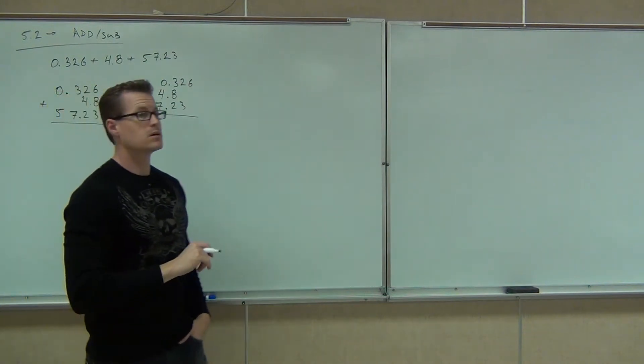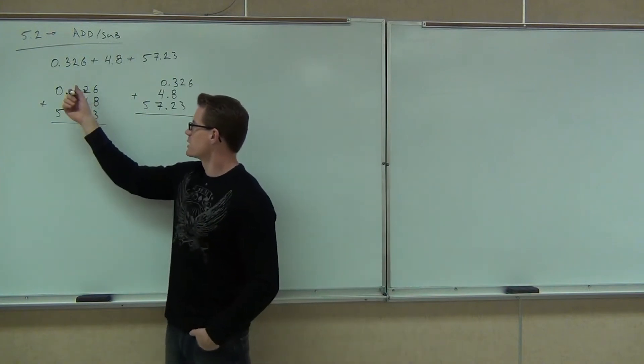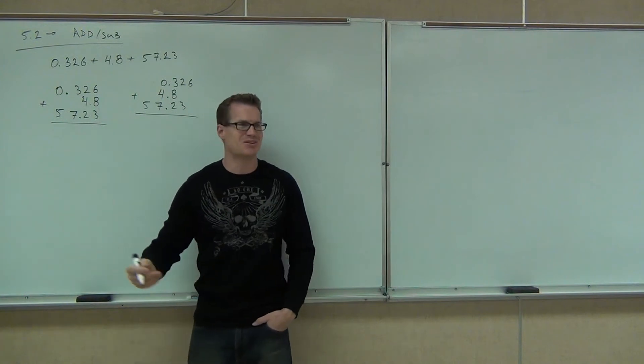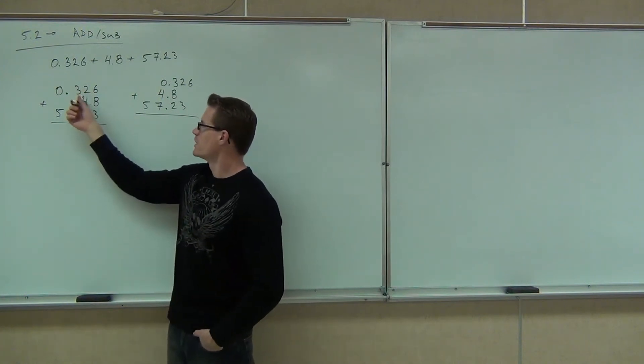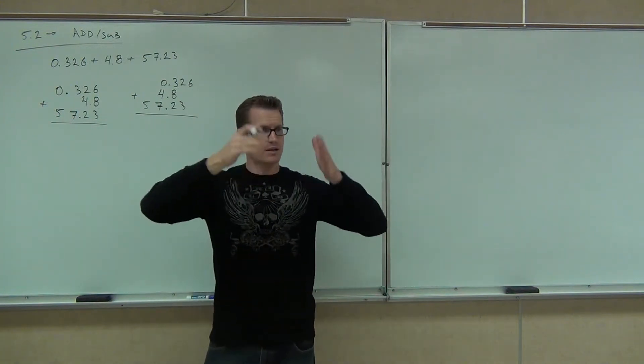Why? Because you want your place values in order. You've got to have places the same. If you did this way, you'd be adding thousandths plus tenths plus hundredths. It doesn't have the same units at all. You'd be adding a whole number to your hundredths and your tenths. That'd be a bad thing. If we line up our decimal place, it organizes everything for us.